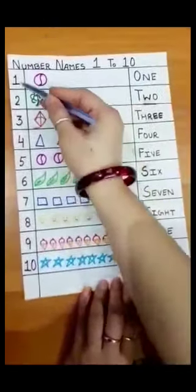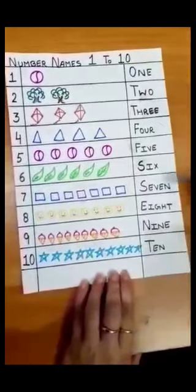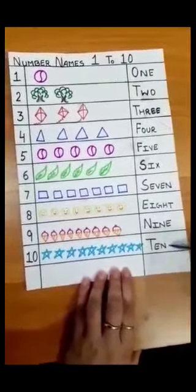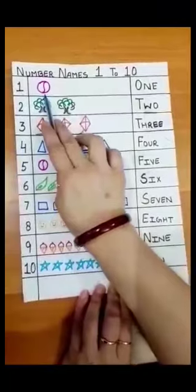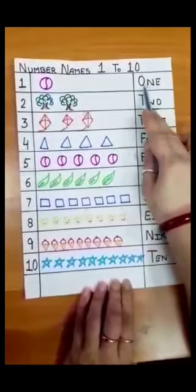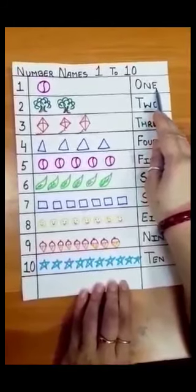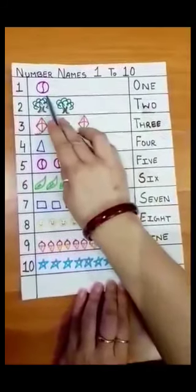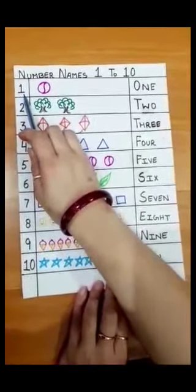These are numerals. These are number names. Now count, one ball. One. O-N-E, one. One is the number name and one is the numeral.